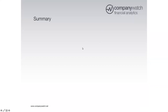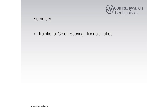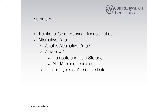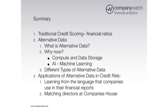Just to summarize the structure of what we're going to talk about: initially we'll go through traditional credit scoring and financial ratios — what people do with current, more traditional financial data. Then we'll move on to alternative data, asking questions like what it is and why people are using it now, touching on technology, compute access, data storage, artificial intelligence, and machine learning. Then we'll cover what types of alternative data are available for corporate credit risk models.